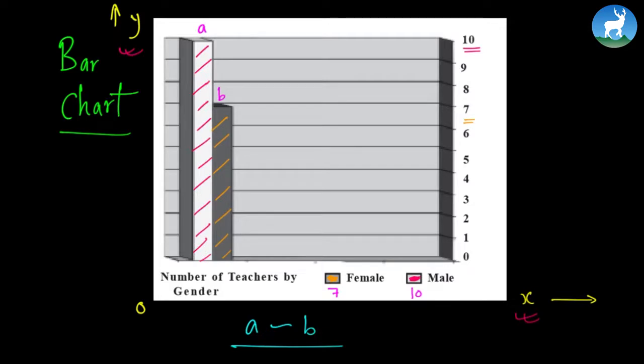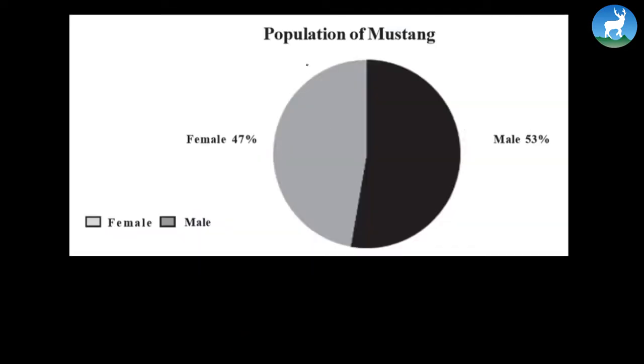Now let's study about pie chart. This is the pie chart and it represents population of Mustang district. Just by looking at it, we find that 53 percent of the people are male and female are 47 percent. This part represents the male part, while this part in the legend and this part in the pie chart represent the female population. Altogether, what is the total population? What is the total percentage? 53 added by 47 is 100. The percentage is 100 and the degree is 360 degrees.